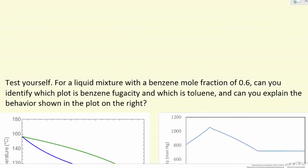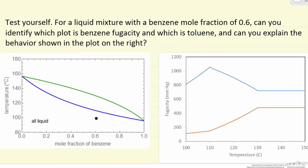I have included a figure at a different starting mole fraction — the TXY diagram starting at 0.6 — along with the corresponding plots of fugacity of each component versus temperature. It would be good practice for you on your own to identify which curve is benzene and which is toluene, and also to explain the behavior of each curve in each region.